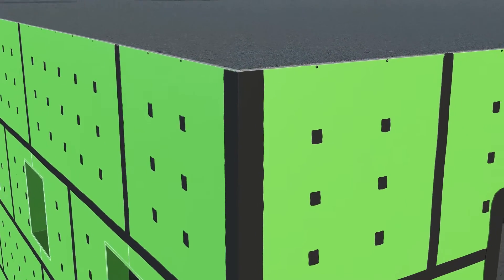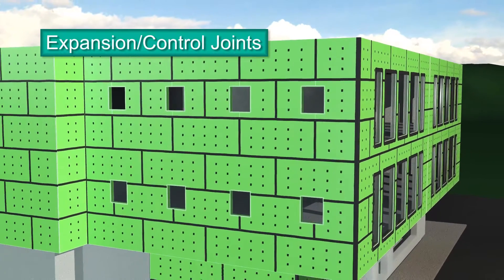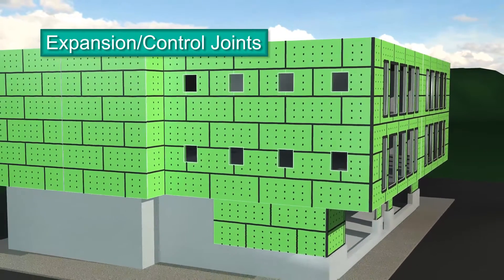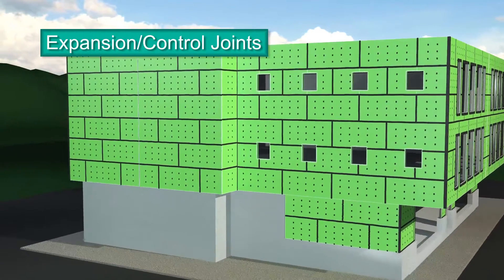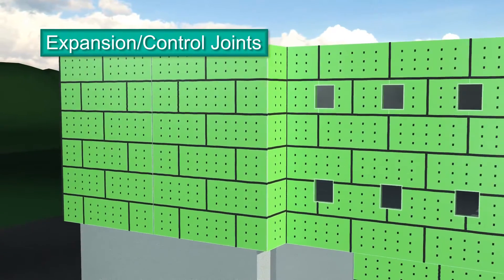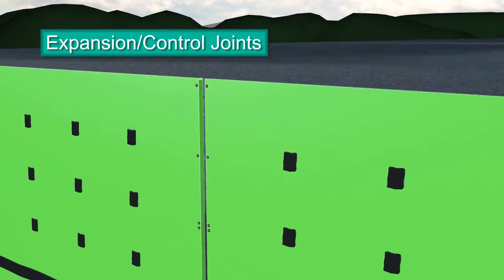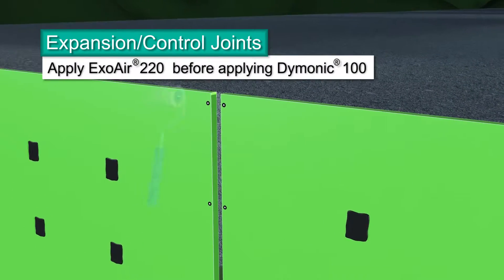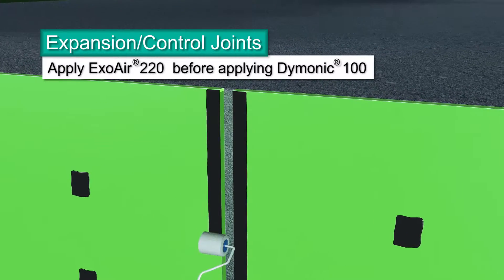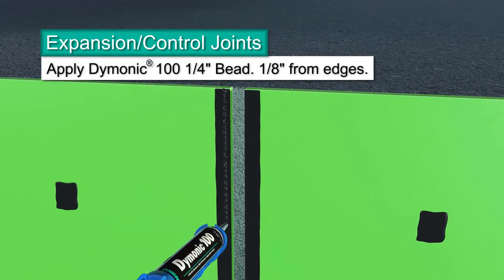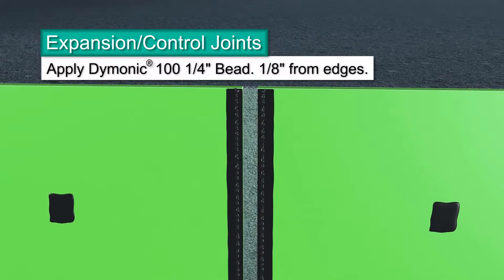Expansion joints accommodate inevitable building movement. They're designed to absorb the expansion and contraction of construction materials. Expansion joints have to be detailed because, just like detailing standard board joints, it is required for continuity of the air barrier system. Using a standard caulk gun, apply a 1/4 inch bead of Dimonic 100, the approved sealant for detailing panels, to each side of the joint.